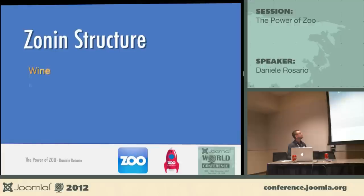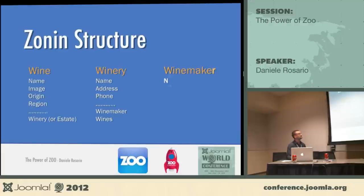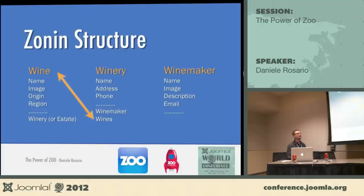To summarize the structure: we have the wine, the winery, and the winemaker. The wine is related to the winery and vice versa. I just link two different content types once and can select and display any information from one type into the other. It's a bidirectional relationship established with a single link.